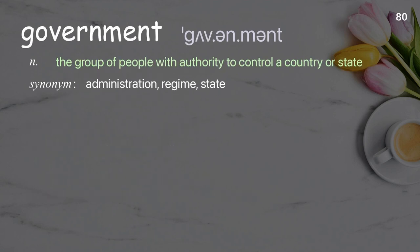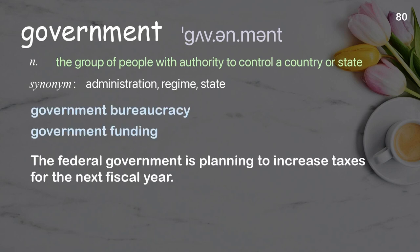Government. The group of people with authority to control a country or state. Examples: The federal government is planning to increase taxes for the next fiscal year.